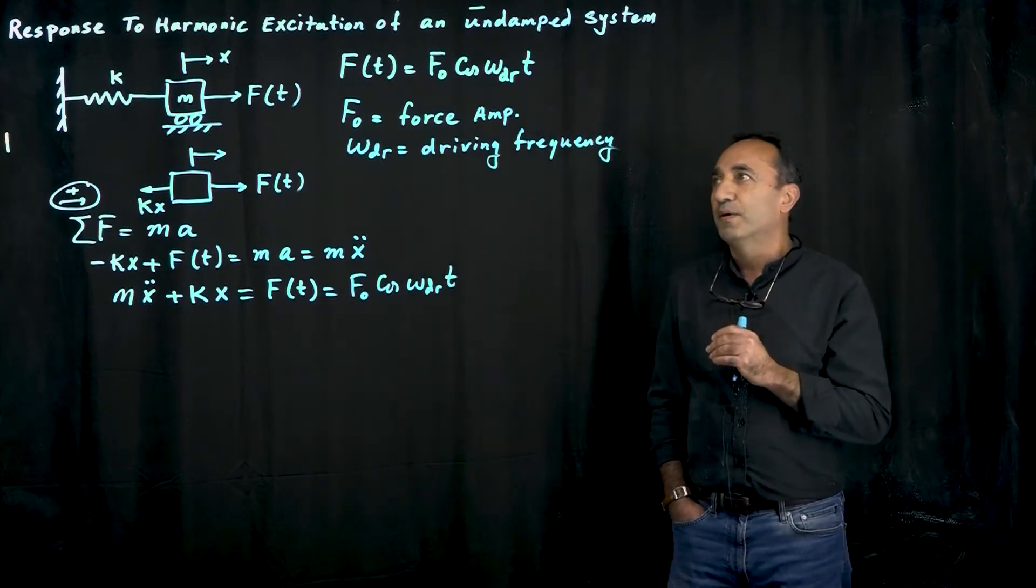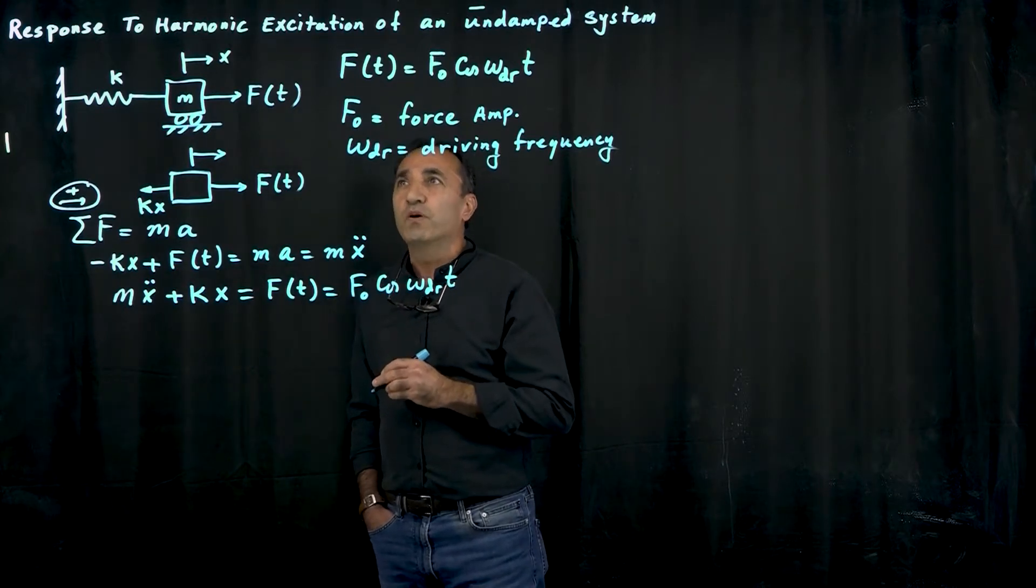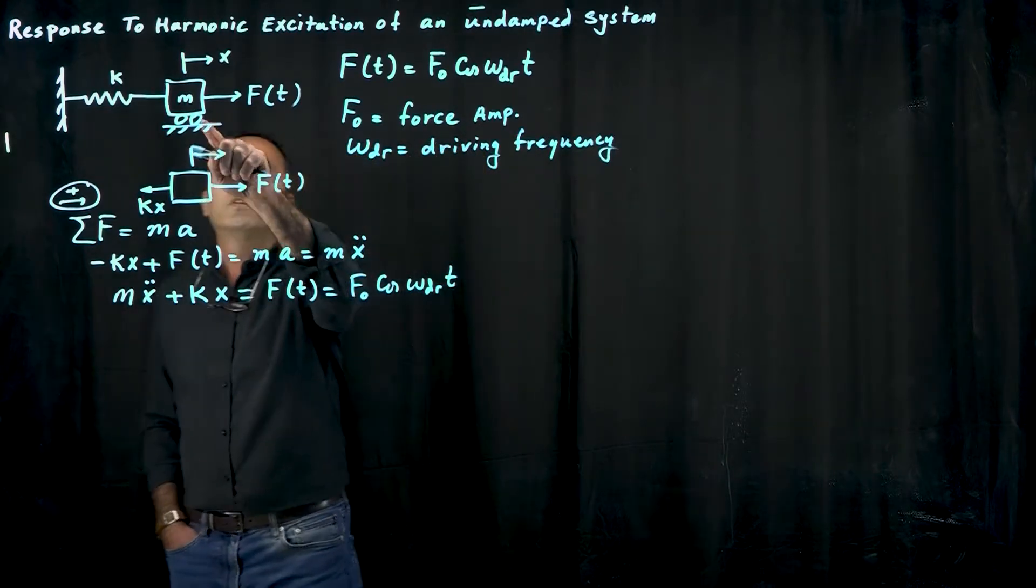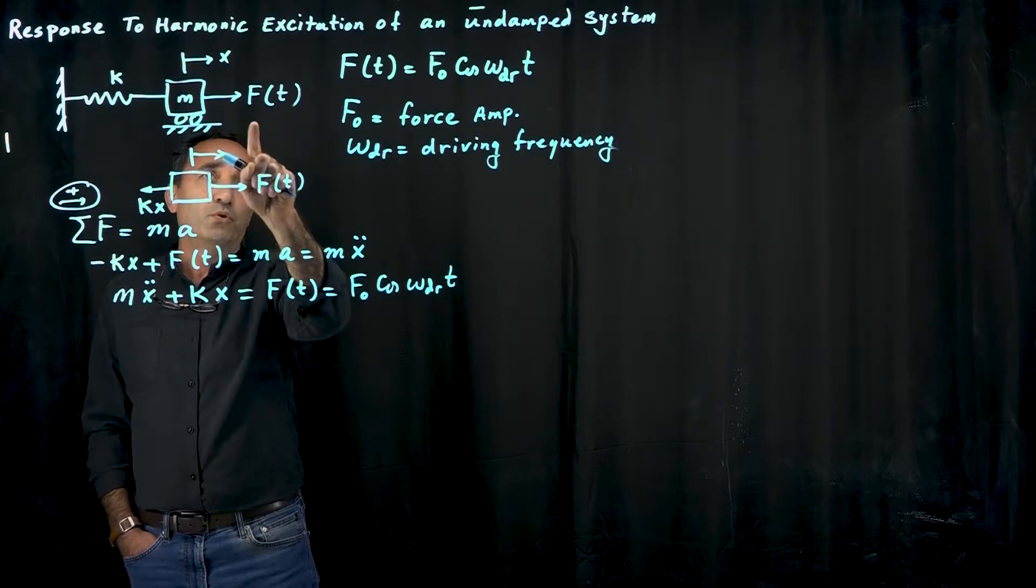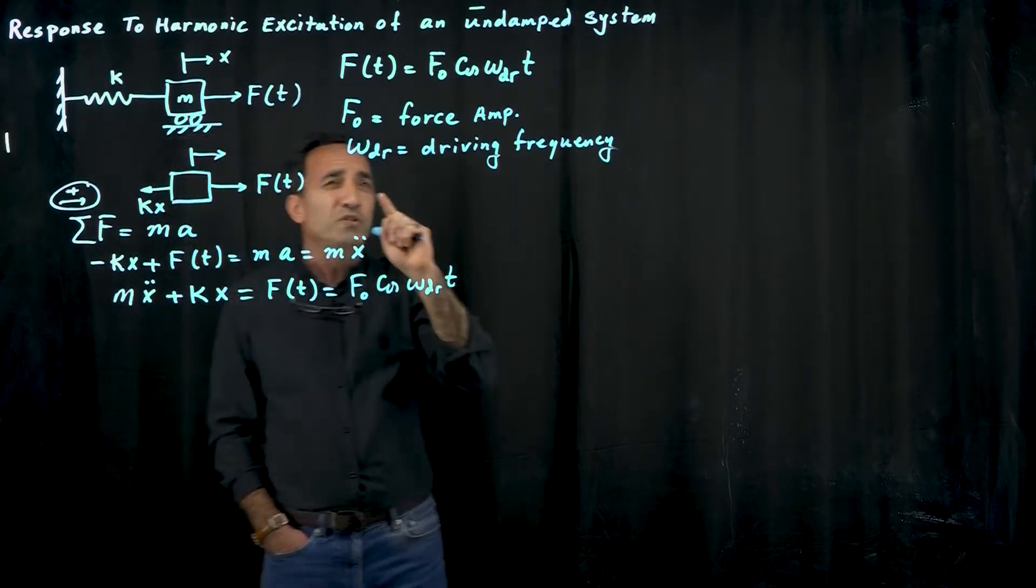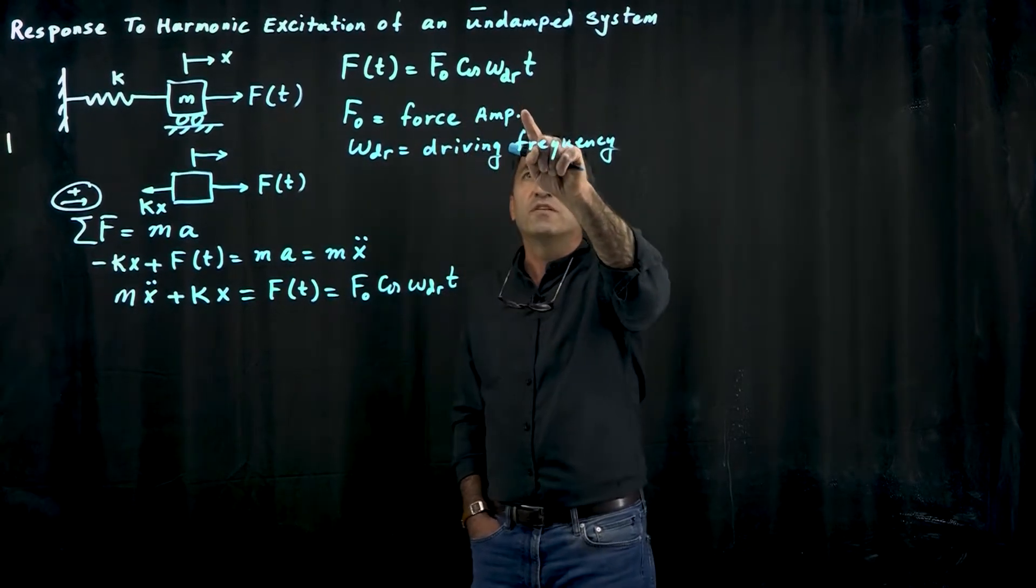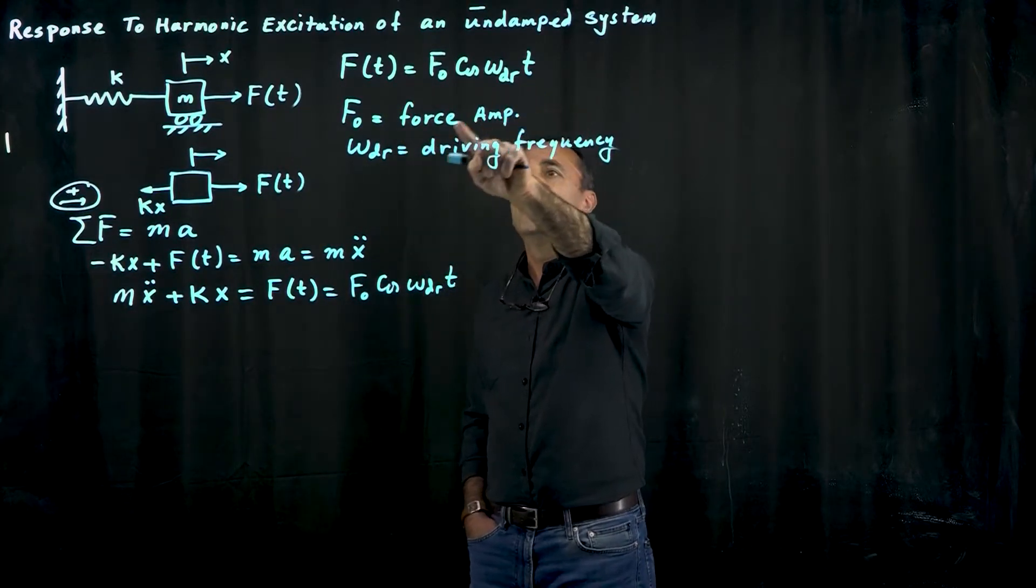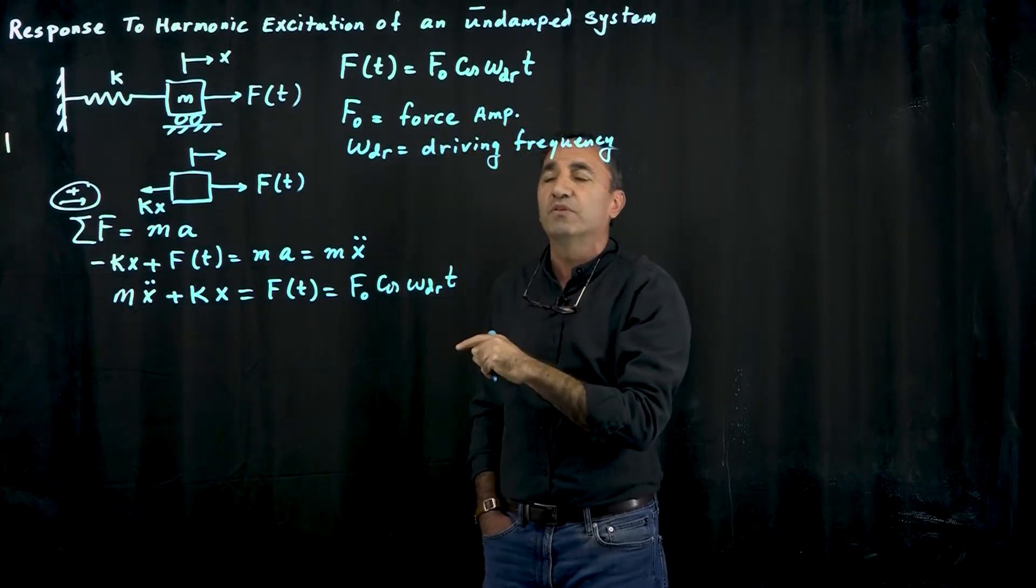What I want to show you here is a problem that has to do with the response to harmonic excitation of an undamped system. Basically we have a system consisting of a mass and spring, no damping, and then this is subjected to a harmonic force F(t). Harmonic force means it's either a sine wave or cosine wave. Here our F(t) is F0 cosine omega_dr t. F0 is the amplitude of the force or force amplitude.